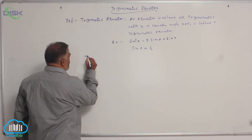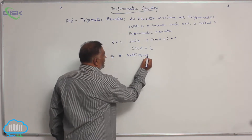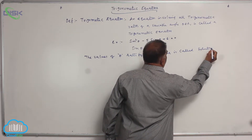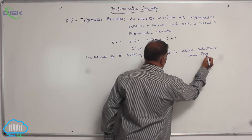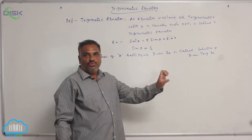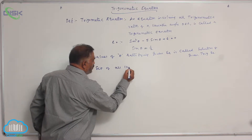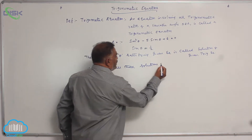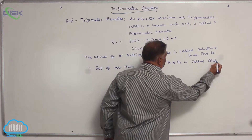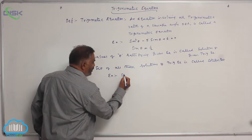The values of theta satisfying the given equation are called the solution of the given trigonometric equation. If you list out all those solutions, the set of all those solutions is called the solution set. Therefore, the set of all solutions of a trigonometric equation is called the solution set.